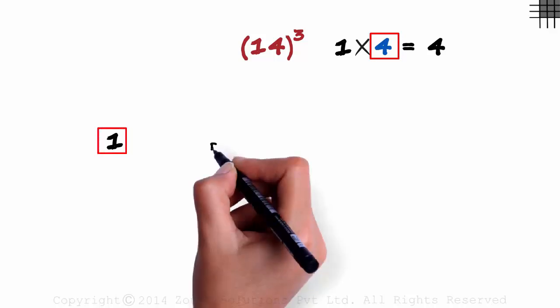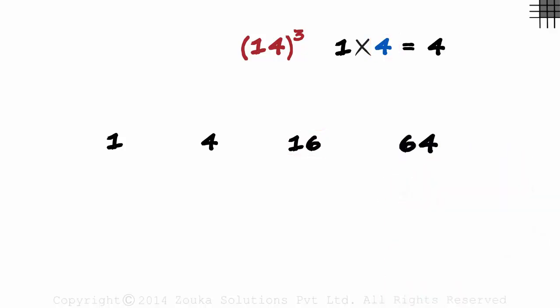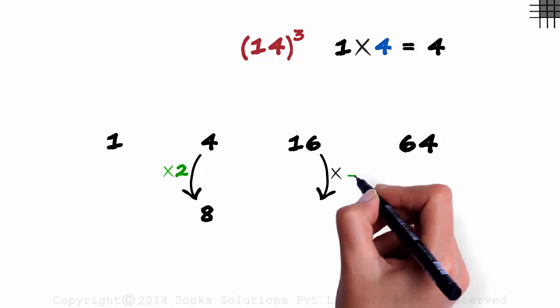Then we multiply it with this number. 1 multiplied by 4 will give us 4. Multiplying this with 4 again will give us 16, and multiplying this with 4 again will give us 64. Once we are done with 4 columns, we multiply the numbers in the second and the third columns with 2. 4 times 2 is 8 and 16 times 2 is 32.